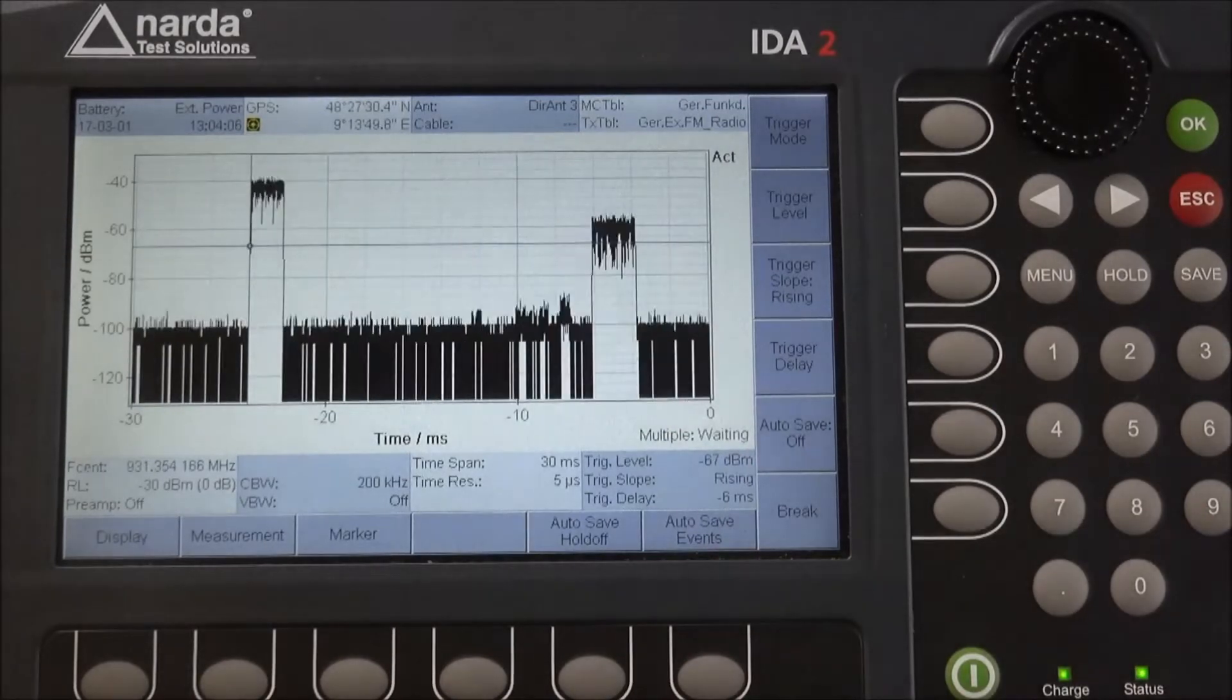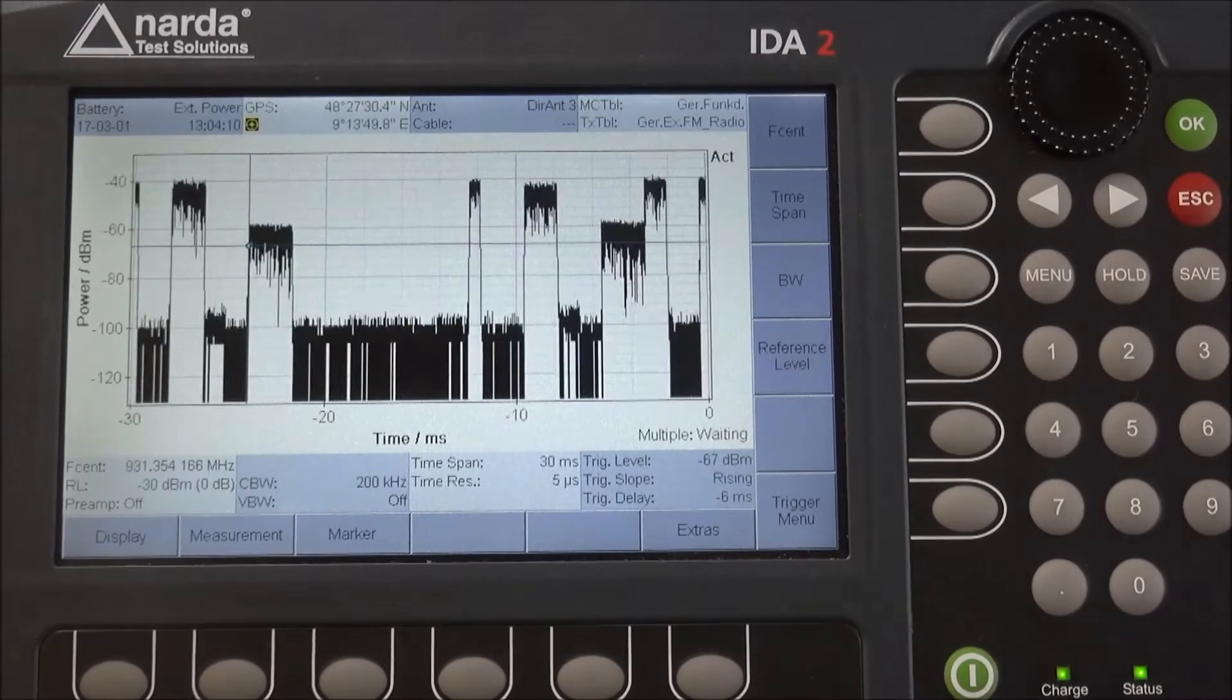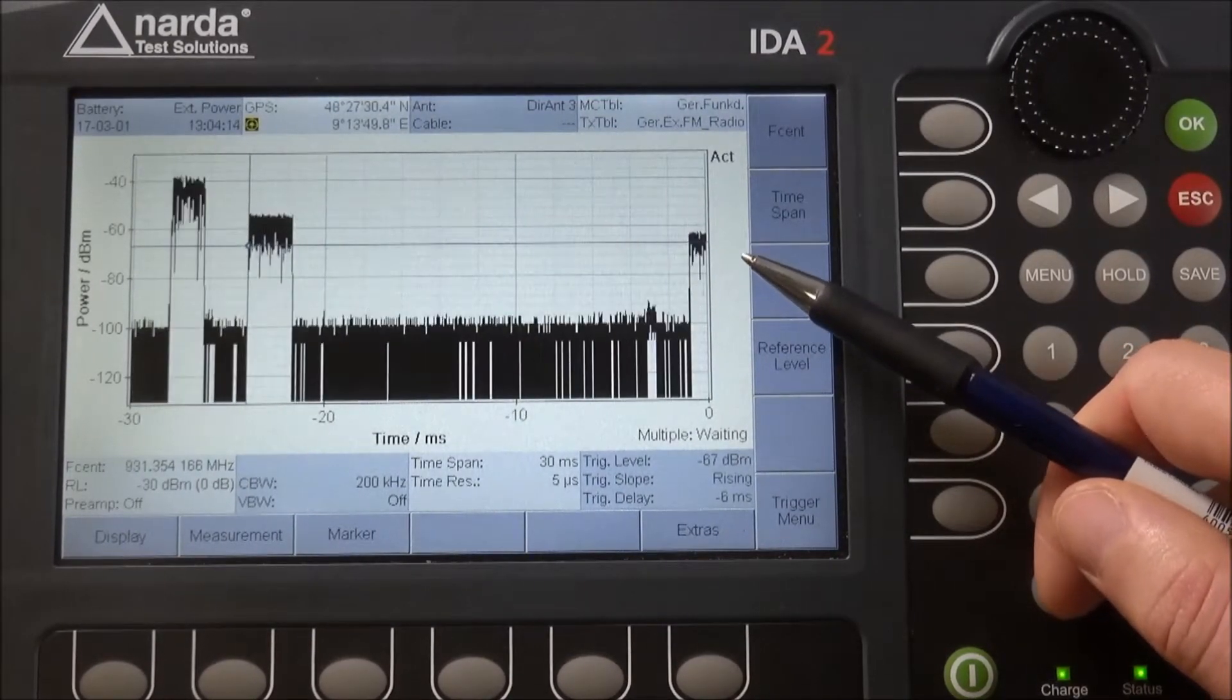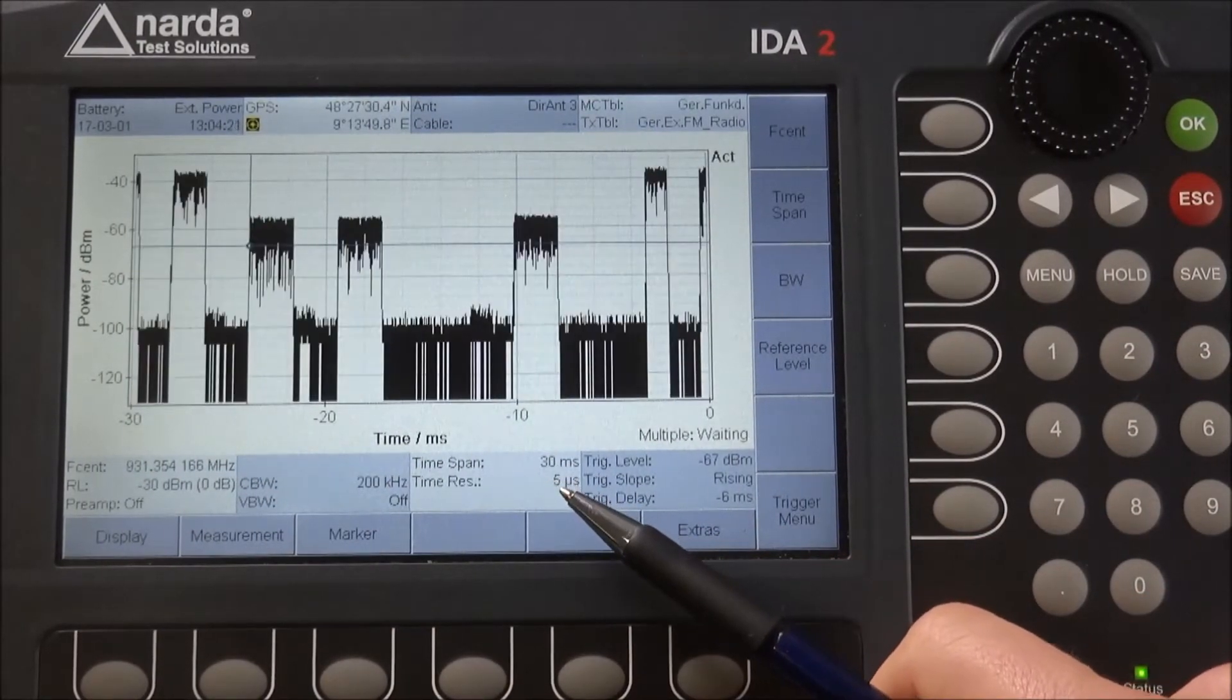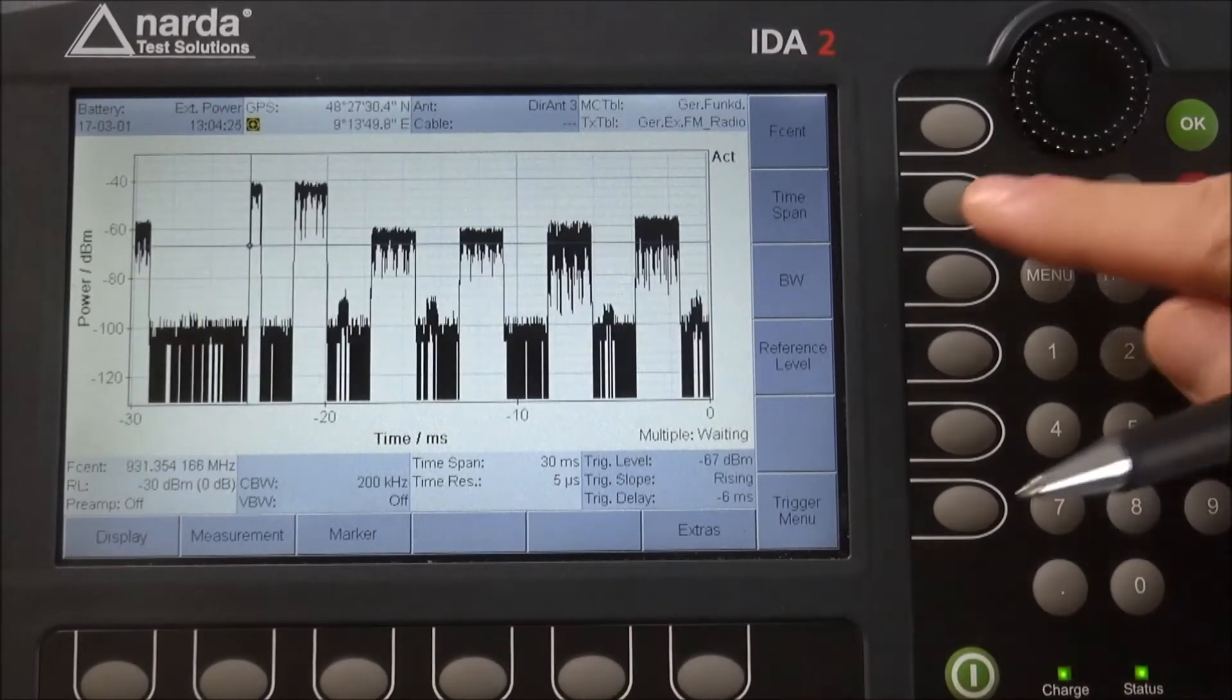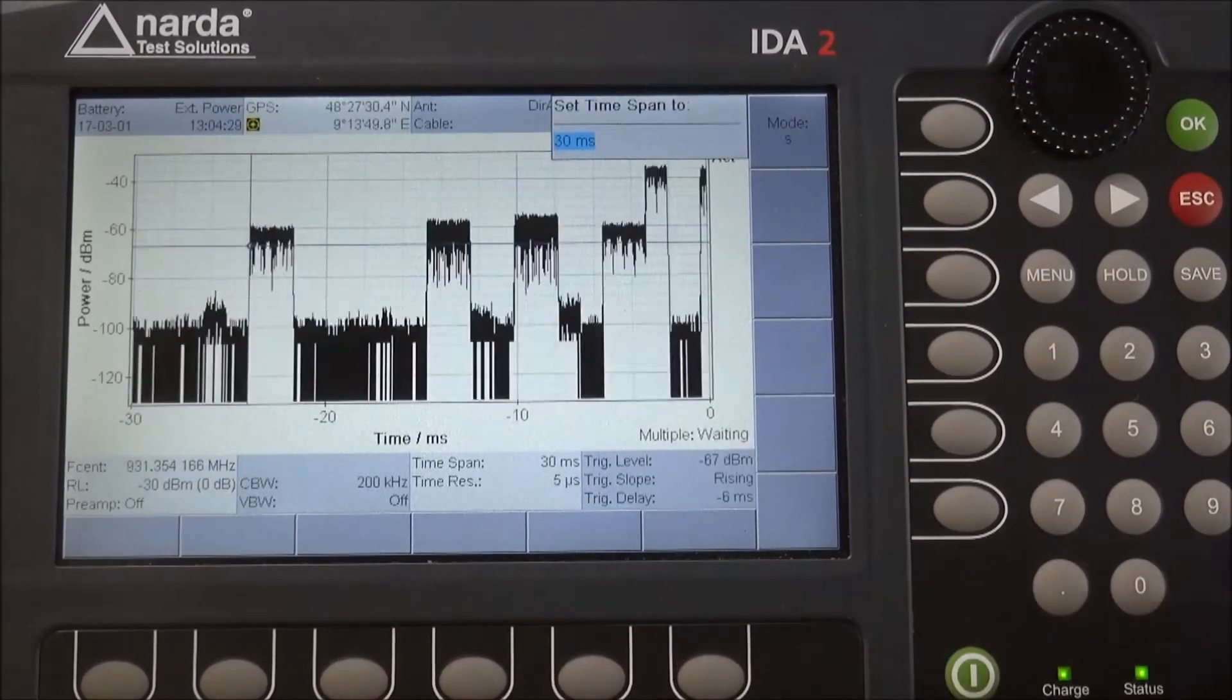As this is the scope mode, I can not only change the frequency and the bandwidth but also change the time span. The time span currently amounts to 30 milliseconds. If I want to take an even deeper look onto my signal, I can change it to five milliseconds.